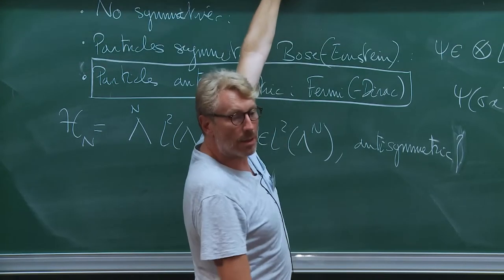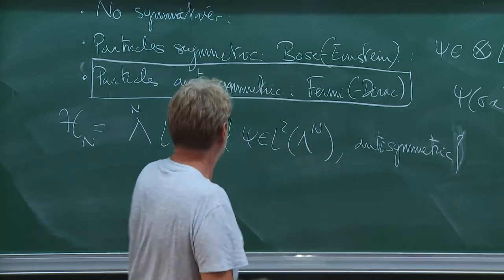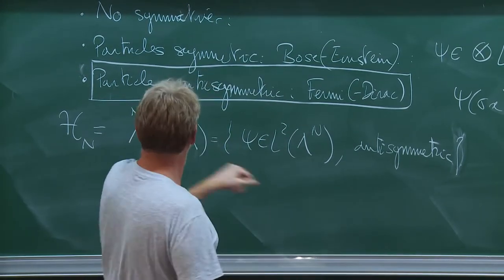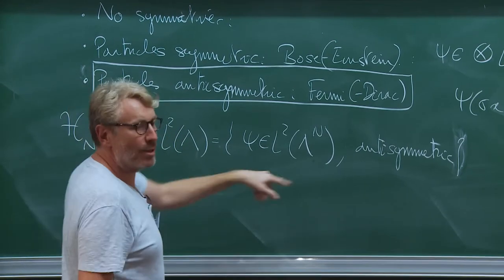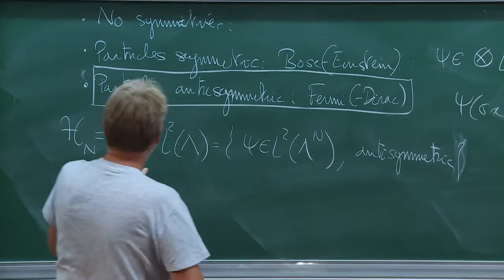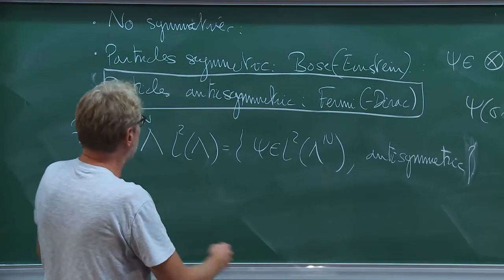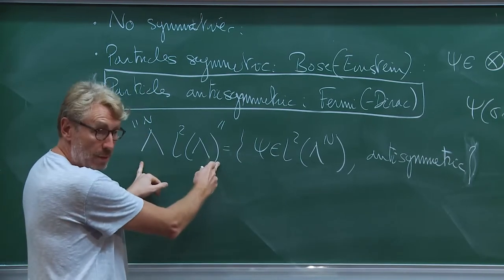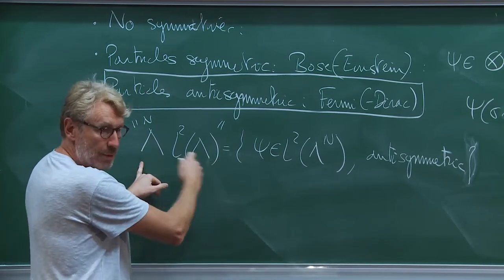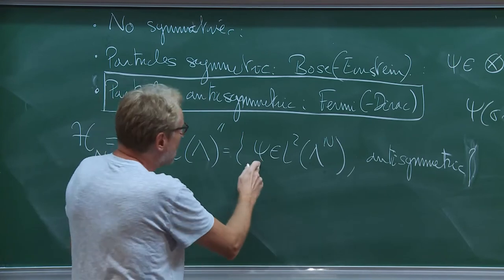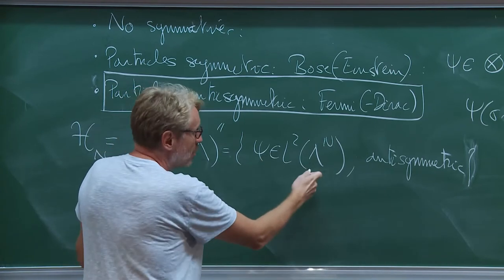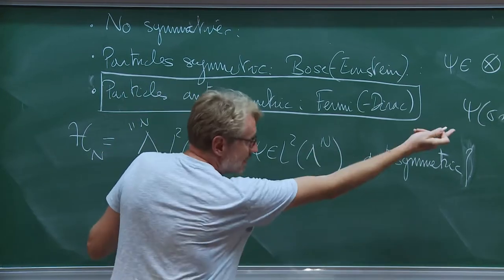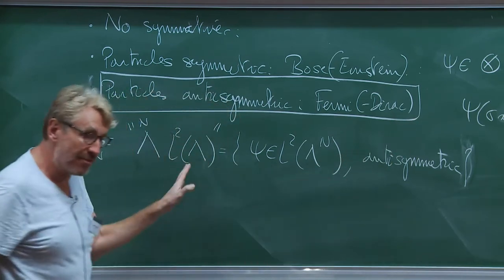Now — sorry, what was the lambda with the n above it? The lambda with the n above it is just a cube. That's the anti-symmetric tensor product, so it's just a notation. That's the definition of this symbol: the psi's are L^2 functions over this cube of large dimension that satisfies this anti-symmetry.